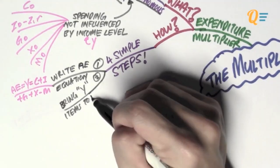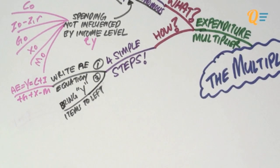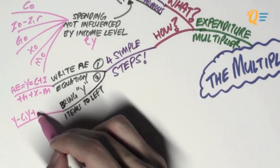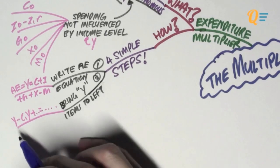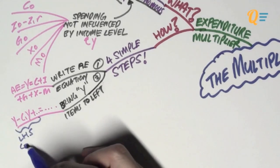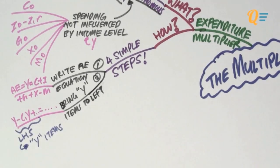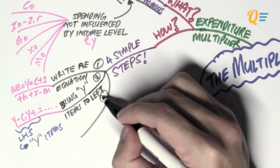So, the second step would be to bring all the Y terms to the left-hand side of the equation. So, basically, it's everything that has got Y part of it. So, for example, C1 times Y. So, that is the left-hand side of the equation. Now, we want to put all the Y-related items on the left-hand side.